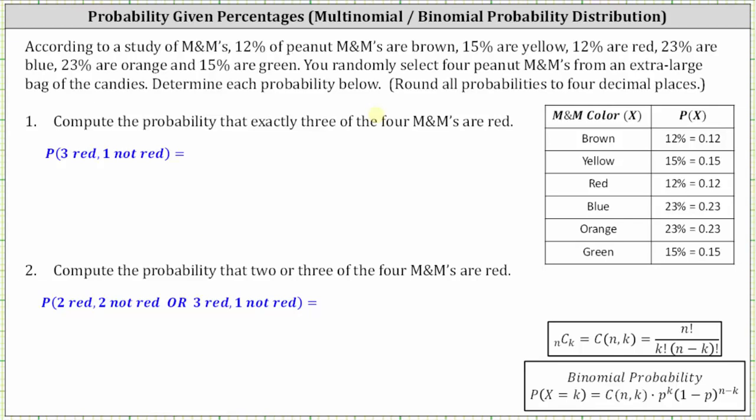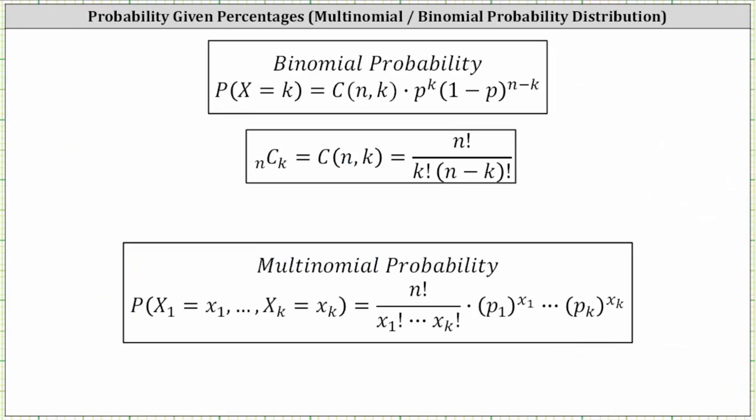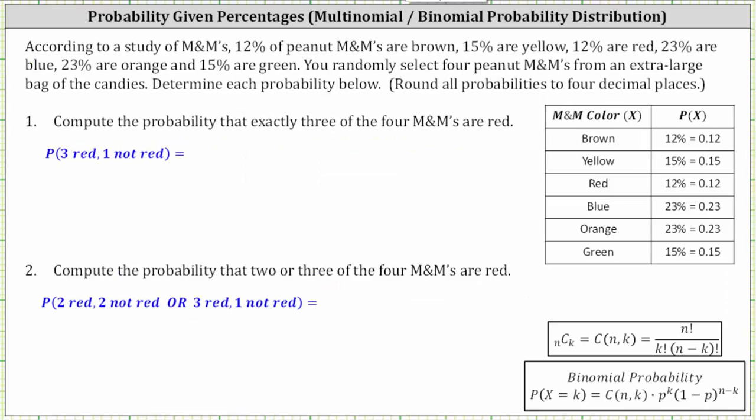This probability distribution is a multinomial probability distribution because there are multiple outcomes. Remember, if there are only two outcomes, we have a binomial probability distribution. But for these questions, all the probabilities involve the M&Ms being red or not red, and therefore we can find these probabilities using the binomial probability formula shown here at the bottom of the screen. If we were trying to find probabilities involving multiple colors of M&Ms, we would have to use the multinomial probability formula.